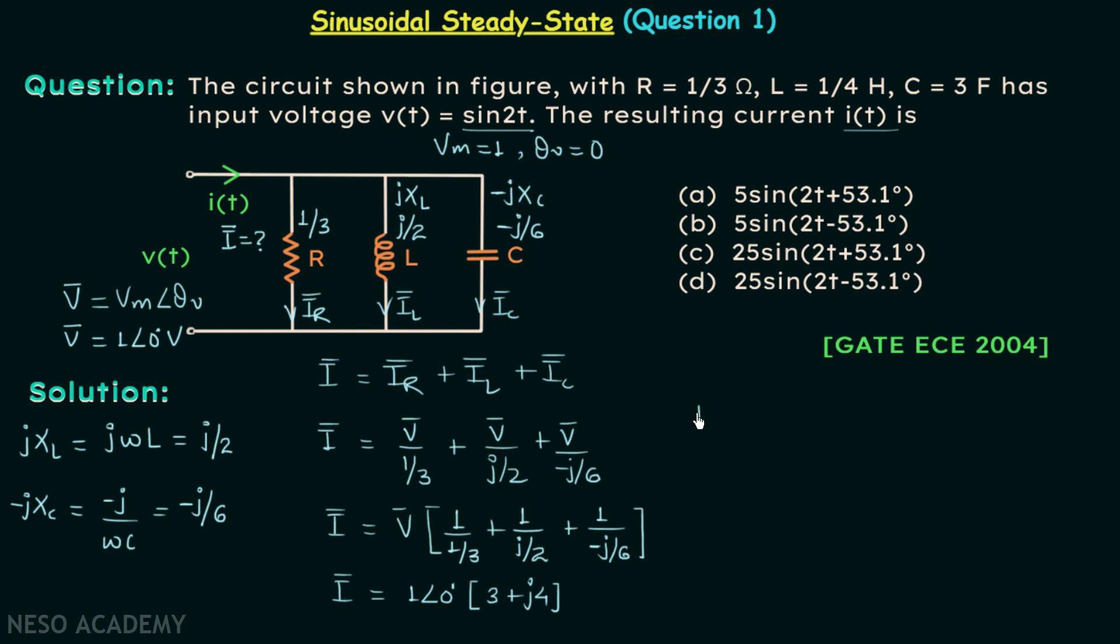So in the next step we will have I phasor equal to 1 angle 0 degrees multiplied by 5 angle 53.13 degrees. From here we will have I phasor equal to 5 angle 53.13 degrees.